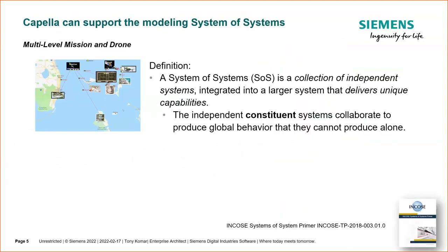I'm going to start by talking about system of systems modeling by giving a definition. The definition I'm using is from the INCOSI System of Systems Primer — a very good, easy-to-read reference. It says a system of systems is a collection of independent systems integrated into a larger system that delivers a unique set of capabilities. The independent constituent systems collaborate to produce emergent behavior that they cannot produce alone. I'll use the term 'constituent systems' throughout this presentation.